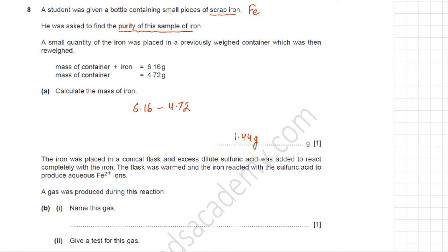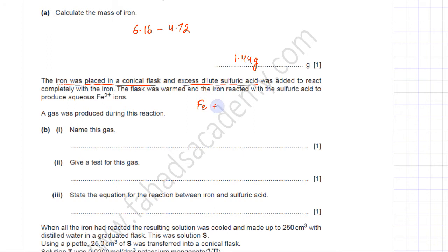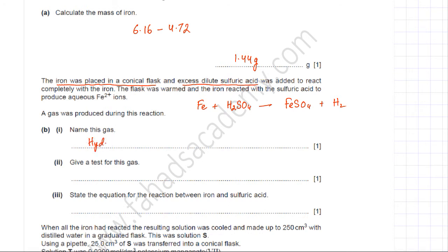The iron was placed in a conical flask and excess dilute sulfuric acid was added to react completely with the iron. The flask was warmed and the iron reacted with H₂SO₄ to produce aqueous Fe²⁺ ions. A gas was also produced — this gas is hydrogen. The test for hydrogen gas is a lighted splint; burning hydrogen produces a pop sound.